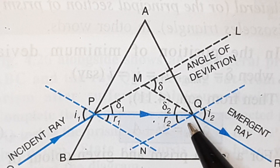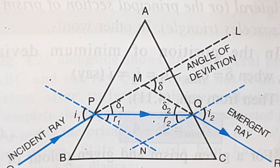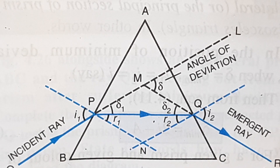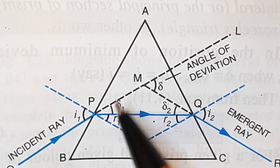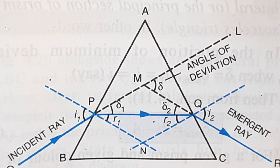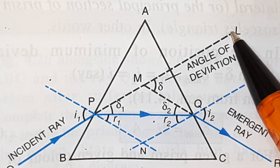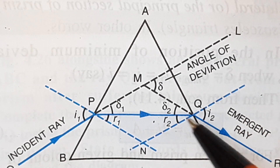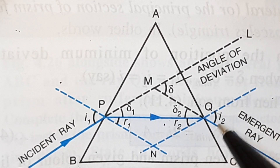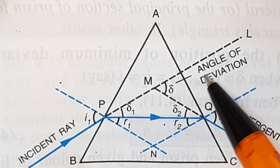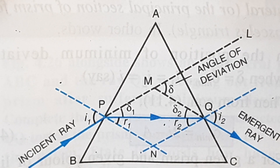At the second surface — glass to air — the ray bends away from the normal, emerging towards the base. The incident ray bends towards the base at the first surface and towards the base at the second surface. If you extend the original ray backwards, you can compare its original direction with the final direction of the emergent ray. The angle between them is called the angle of deviation.